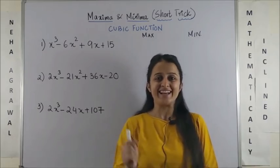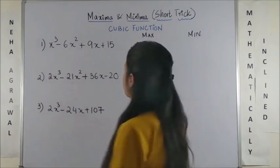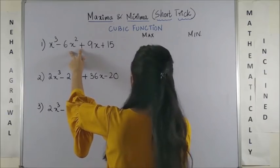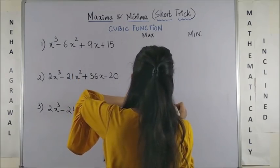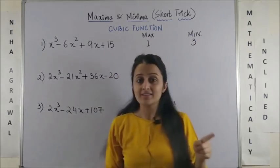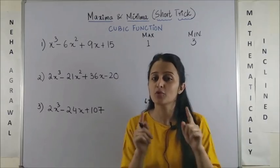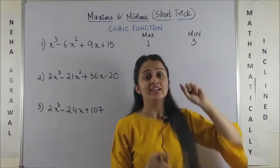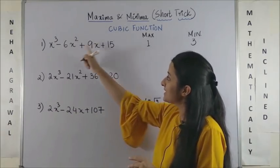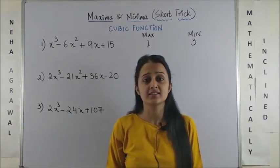You know when you are on this channel. So, the answer to first one should be maximum would occur at 0.1 and minimum would occur at 0.3 and of course if you want the maximum or minimum value you can always put x equal to 1 and get this answer and x equal to 3 and get this answer.